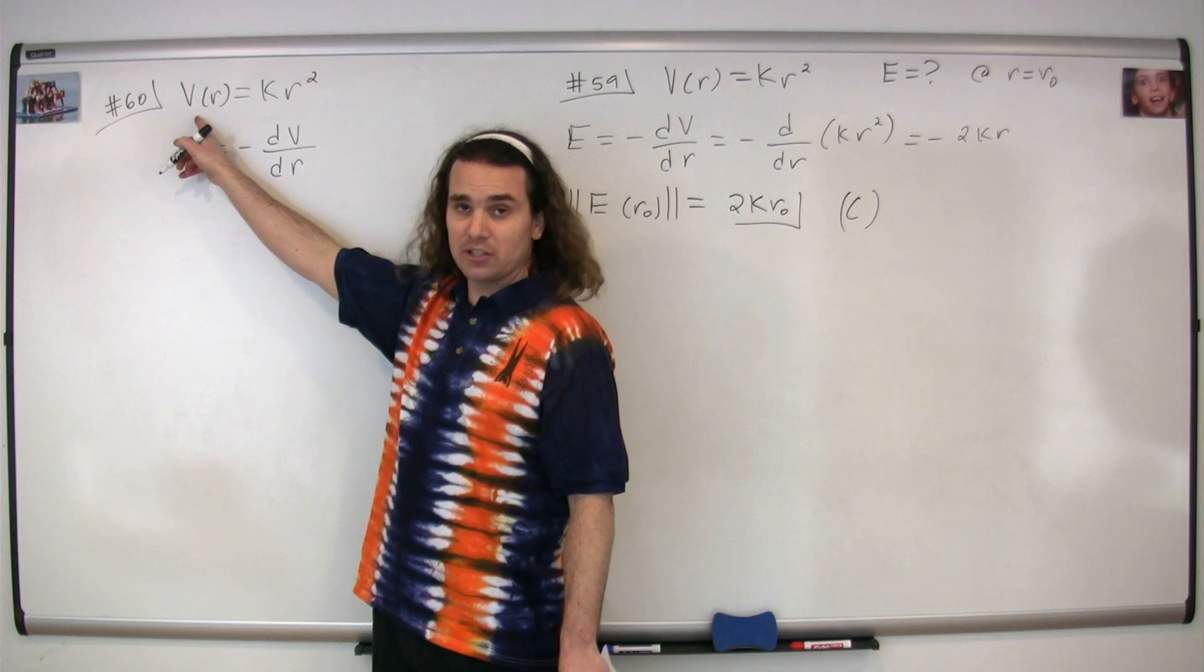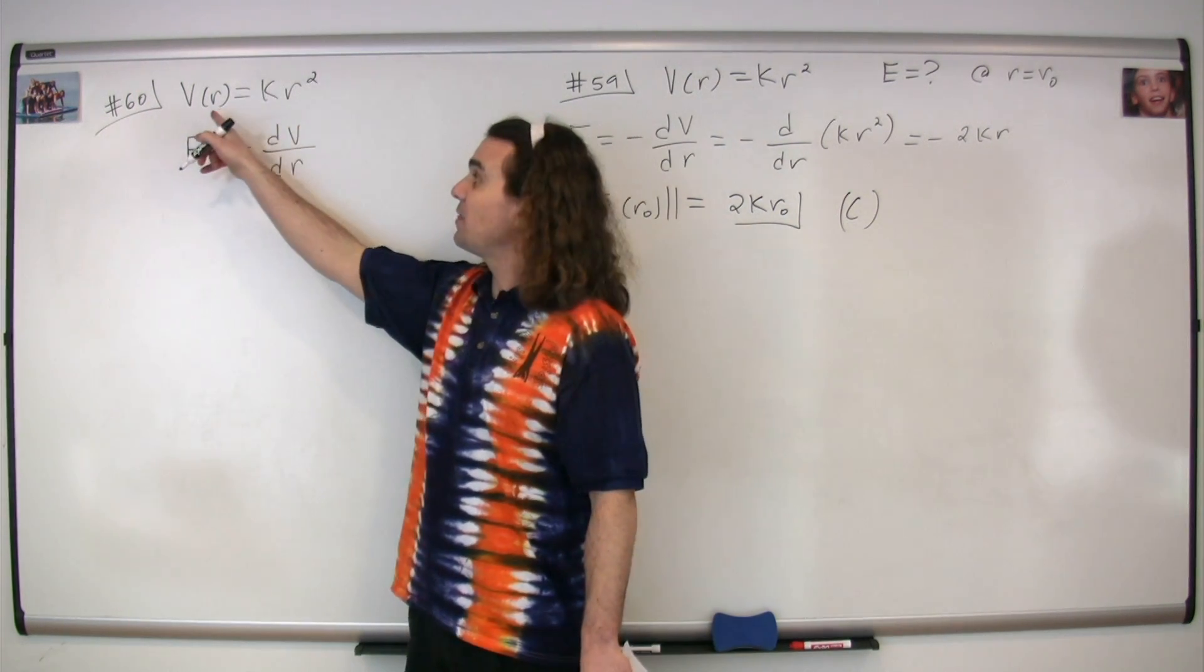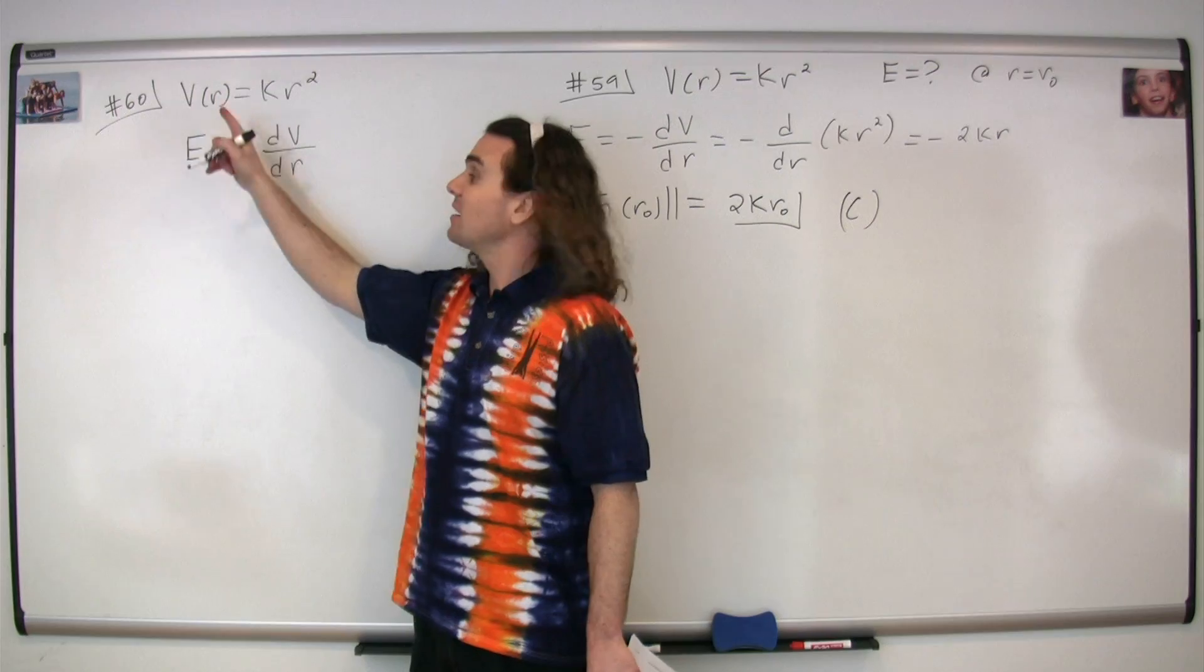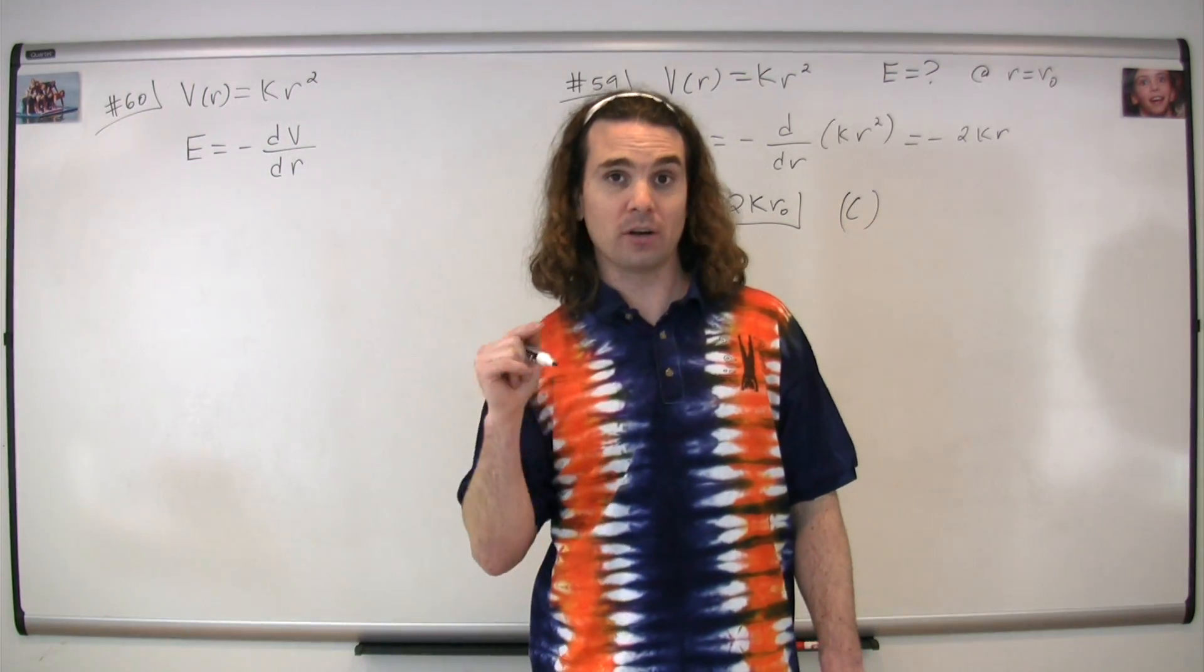According to the equation for electric potential, kr squared, as r increases, then the electric potential increases. Therefore, the electric field is going to be opposite that direction, or toward the origin.